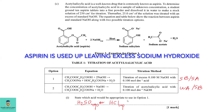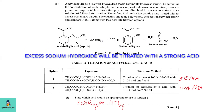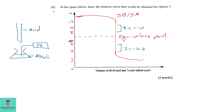For part one, state which acid would be appropriate to use in option one. In the back titration, the sodium hydroxide is in excess and must be titrated with a strong acid — so sulfuric acid or hydrochloric acid can be used. For C part two, draw the titration curve for option one. We are titrating a strong acid with a strong base, with the alkali in the conical flask and the acid in the burette. The titration starts at a high pH and as the acid is added it drops to a low pH between 1 and 3.